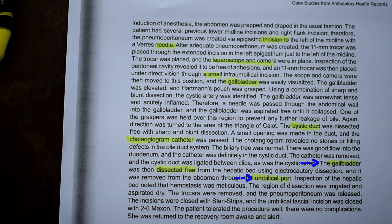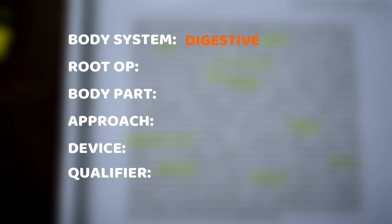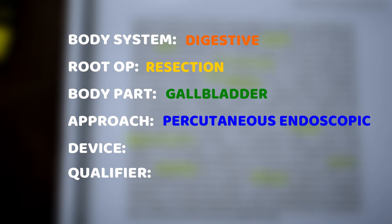Then they remove the gallbladder through the umbilical port. Now where else did they talk about how they got a port in there? Are they considering the trocar with the needle as the port? That seems kind of small. I'm going to assume the port is their initial incision — they've done whatever to stabilize it so they can pull out the gallbladder without ruining any tissue around that incision. So I'm going to say with this procedure: the body system is the digestive system, the root operation is resection because they're taking out the entire gallbladder — not part of it, all of it — that would be considered a resection. Our body part is gallbladder.